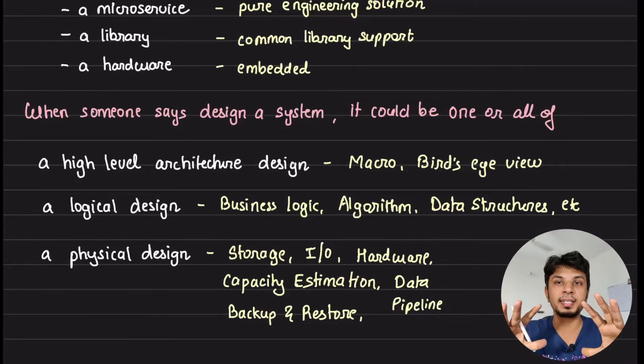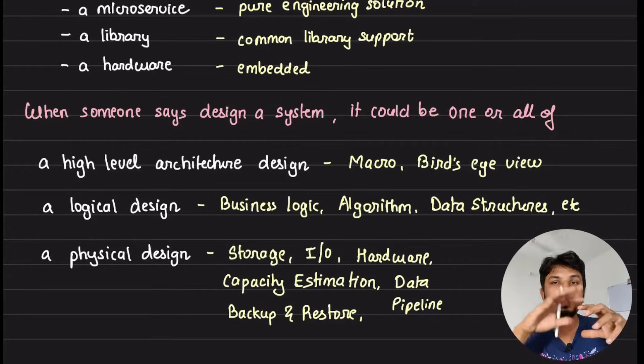Where you are supposed to design a macro bird's eye view of that system where these would be the microservices that talk to each other, this is how the interaction would happen, this is how the persistence would happen on a high-level architecture side.